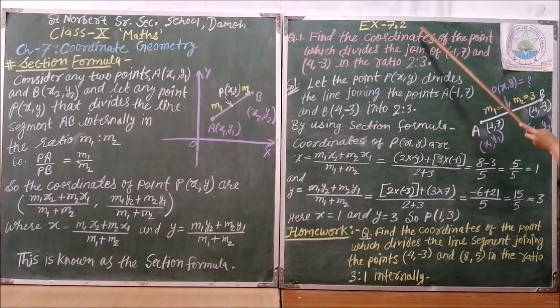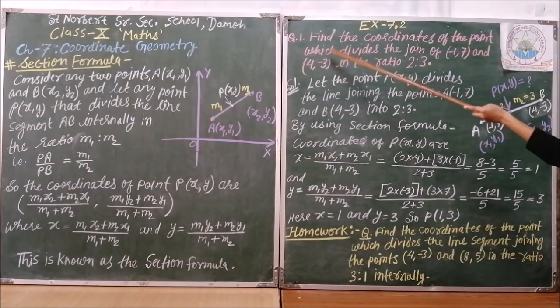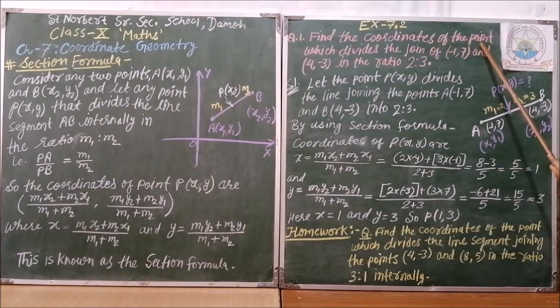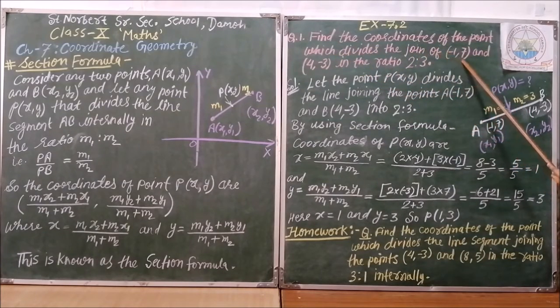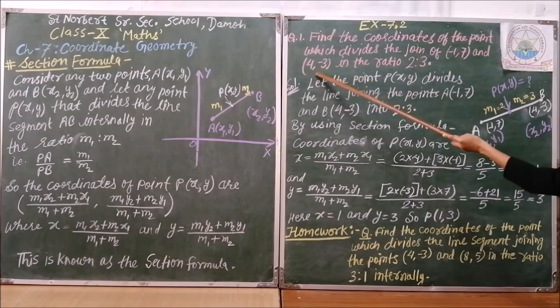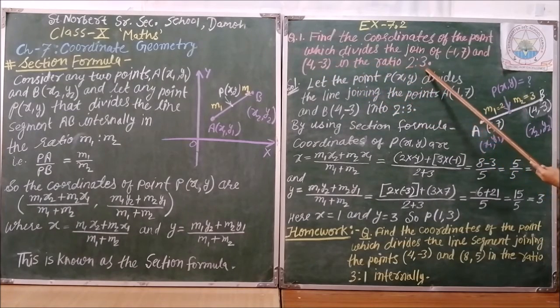Now, we will start exercise 7.2. Question number first, find the coordinates of the point which divides the join of minus 1 comma 7 and 4 comma minus 3 in the ratio 2 ratio 3.